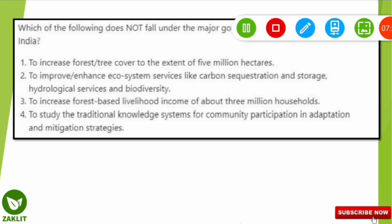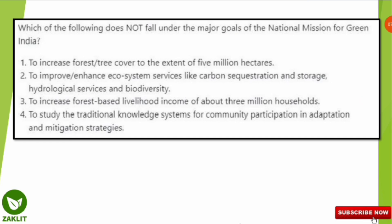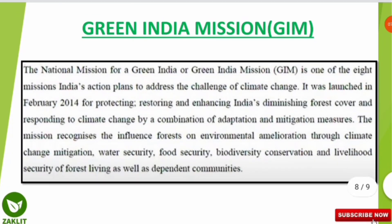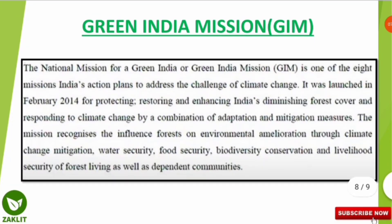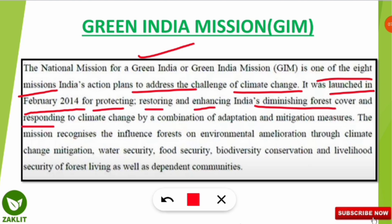The next question asks which option does not fall under the major goals of the National Mission for Green India. The Green India Mission — also called the National Mission for Green India — is one of eight missions under India's action plan to address climate change. It was launched in February 2014 for protecting, restoring, and enhancing India's diminishing forest cover, and responding to climate change through a combination of adaptation and mitigation measures.